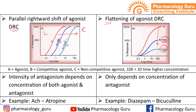The fifth difference concerns the intensity of antagonism. In competitive antagonism, the intensity depends on the concentration of both the agonist and the antagonist. In non-competitive antagonism, the intensity depends only on the concentration of the antagonist. The sixth difference is the example: for competitive antagonism, ACh is the agonist and atropine is the antagonist. For non-competitive antagonism, diazepam is the agonist and bicuculline is the antagonist.